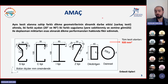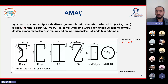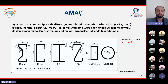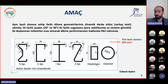Ülkemizde ve dünyada en çok kullanılan otokorkuluk türü çelik otokorkuluklar. Çalışmamızın amacı aynı kesit alanına sahip farklı dikme geometrilerinin dinamik darbe etkisi altında (sarkaç testiyle, 20 derece ve 90 derece olmak üzere iki farklı açıdan) yere sabitlenmiş ve zemine gömülü dikme uygulamaları ile deplasman miktarları esas alınarak dikme performansları hakkında fikir edinmektir. S, C, I, Z, Dikdörtgen ve Dairesel olmak üzere 6 farklı dikme geometrisinin etkisi araştırıldı.